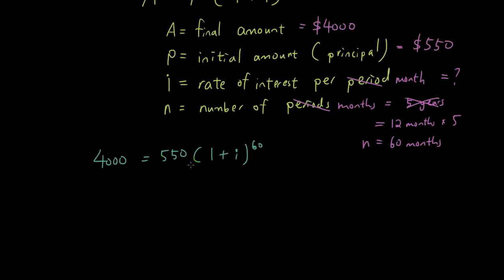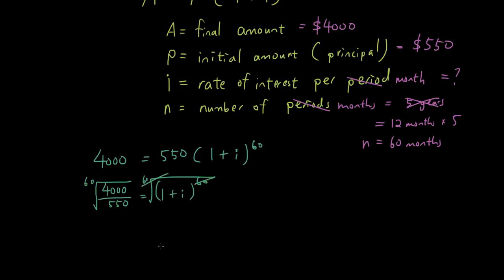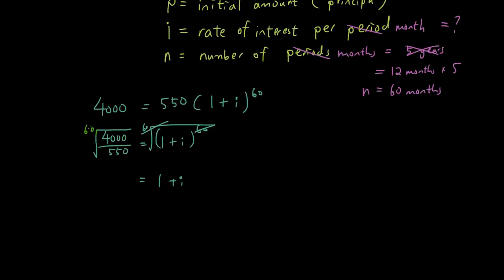Divide both sides by 550, so 4,000 divided by 550 equals (1 plus i) to the power of 60. Now I have to take the 60th root on both sides to get rid of the power of 60. That leaves 1 plus i on the right. Then to isolate i, subtract 1 from the left side. So i equals the 60th root of (4,000 over 550) minus 1.